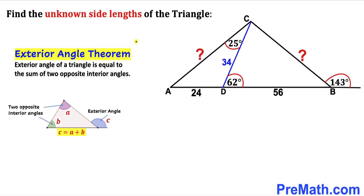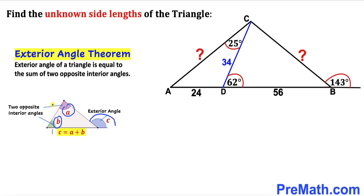Let's recall the exterior angle theorem. According to this theorem, the exterior angle of a triangle is equal to the sum of the two opposite interior angles, as you can see in this diagram. Here, angle C is the exterior angle and A and B are the opposite interior angles, such that angle C equals A plus B.